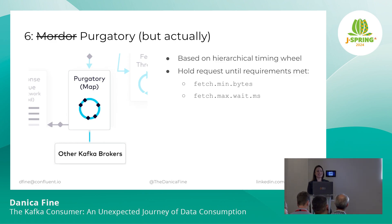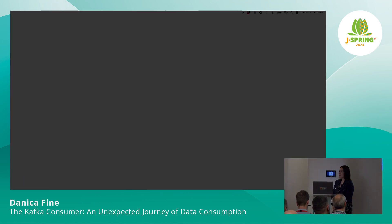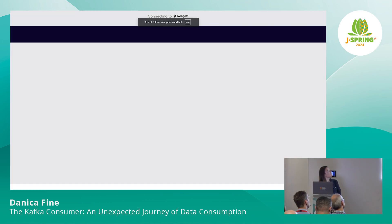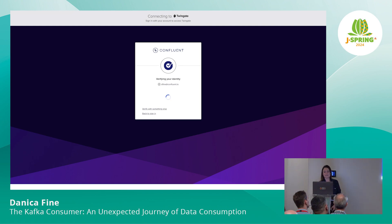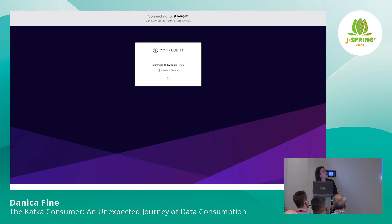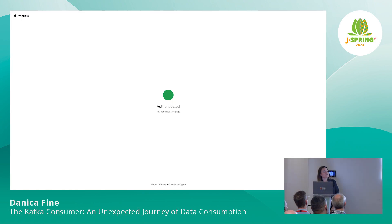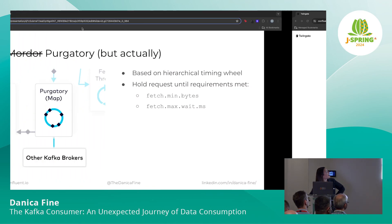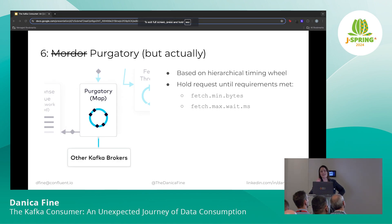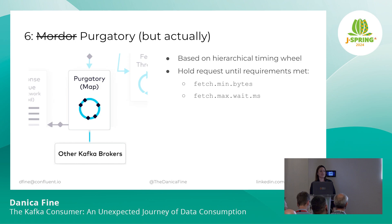Purgatory — which is what it's actually called — is a map-like data structure that's based on a hierarchical timing wheel. We put all unfulfilled requests there before we're ready to send back a response. In this case, we are either waiting for the minimum amount of data to come through to respect the minimum we had, or we're waiting for that maximum amount of time to pass. If we meet the minimum, we send the data; otherwise we send back an empty response.